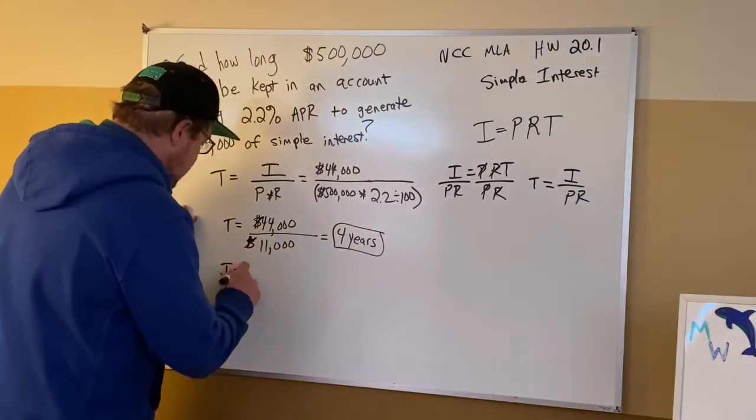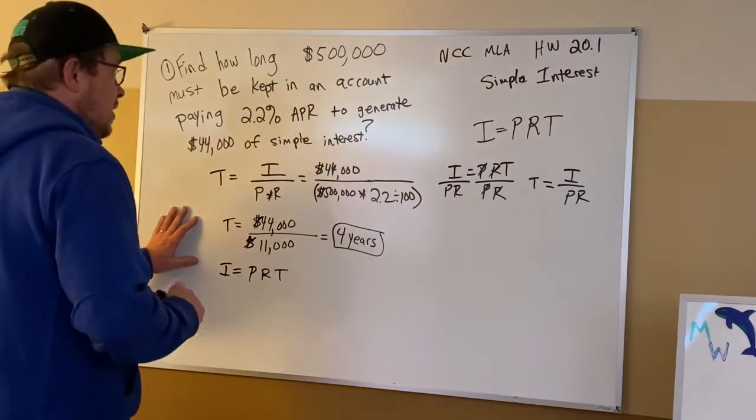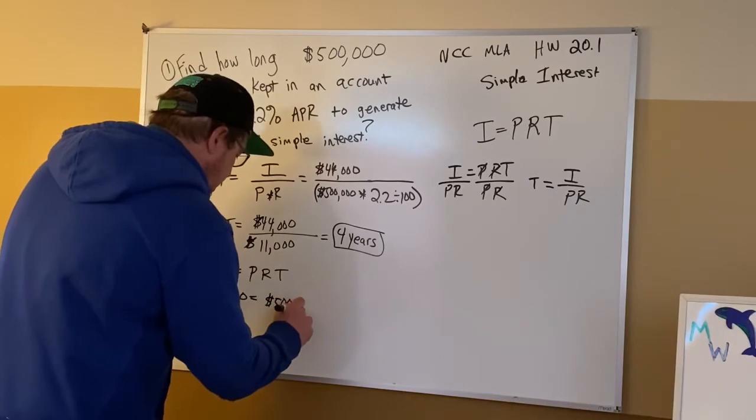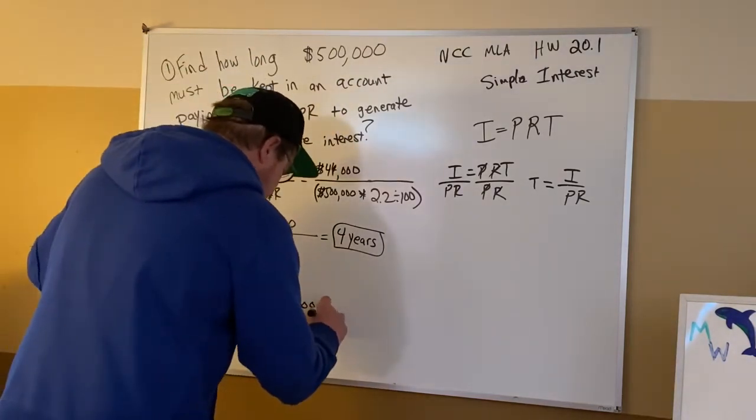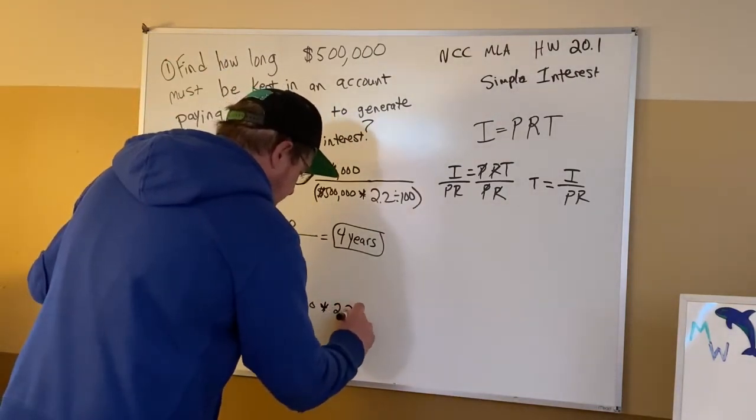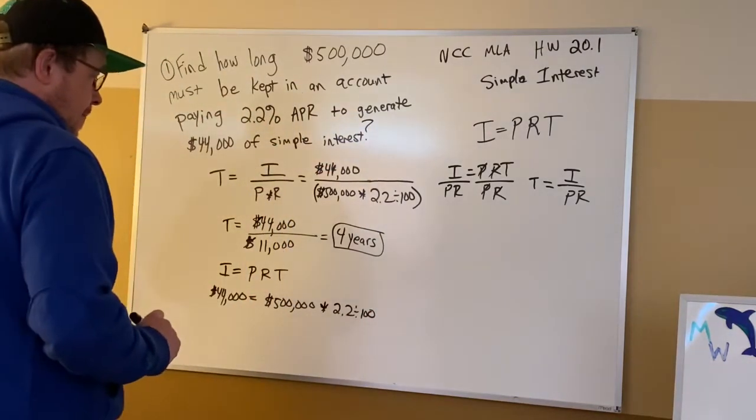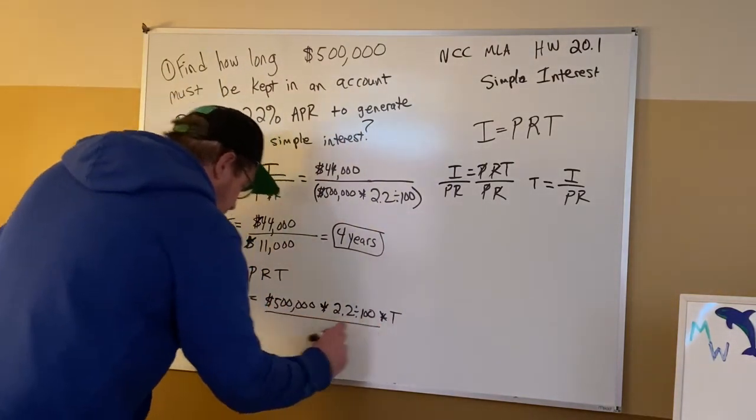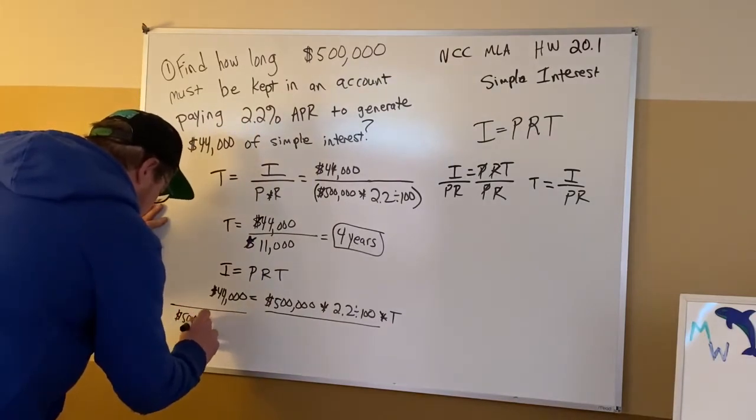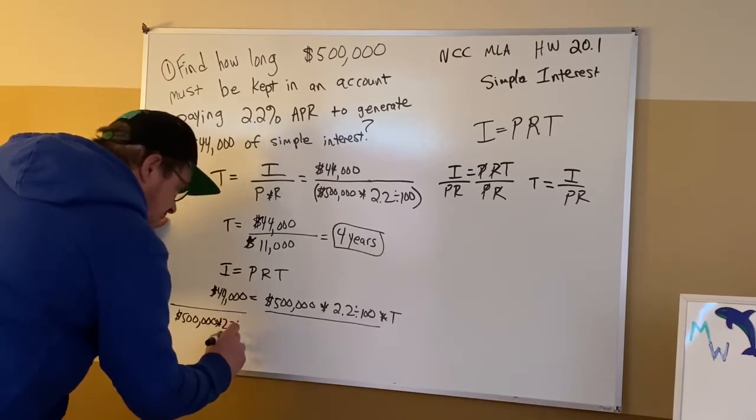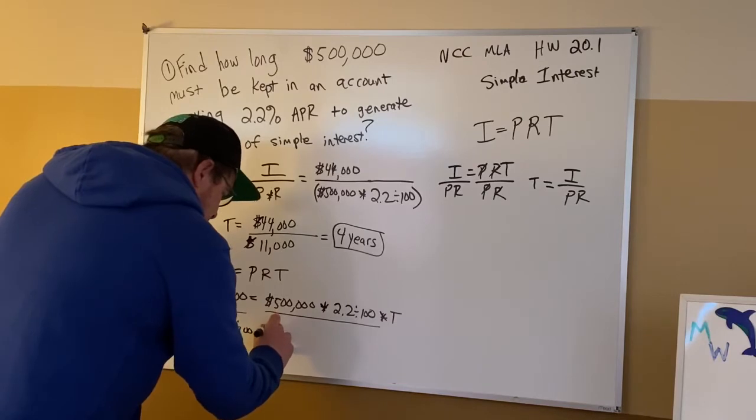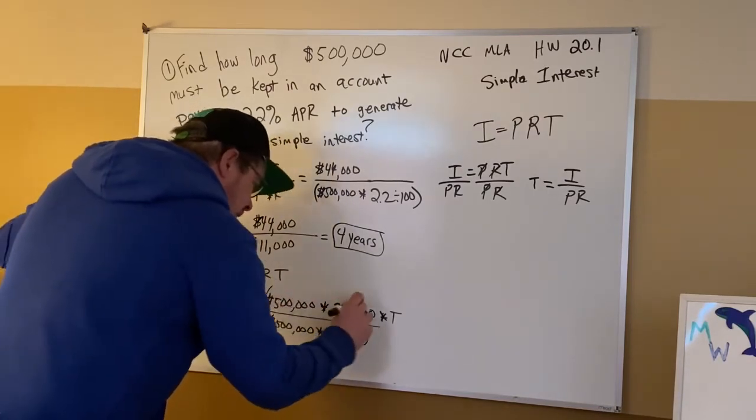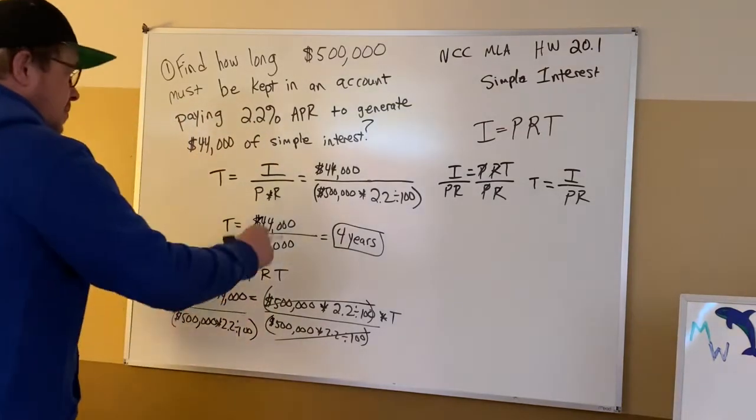That's the other way to do it. If I equals PRT, then I can set it up where the interest is known to be $44,000 equals principal, which is $500,000, and R is going to be 2.2 divided by 100, and then it's followed by T. And now if you look what you have to do, you have to get the $500,000, also down here is times 2.2, and then in that same spot you're dividing by 100. This is going to take the 500,000 times 2.2 and divide by 100. You can take these in parentheses to see that they go out.